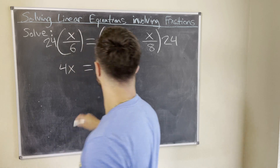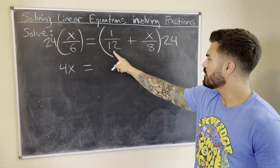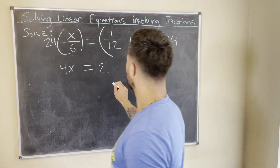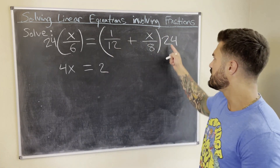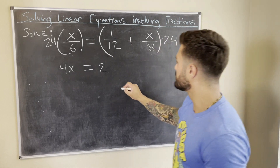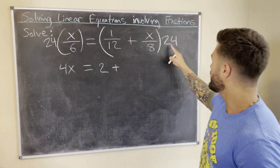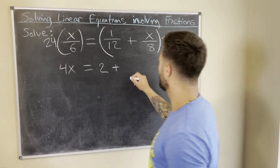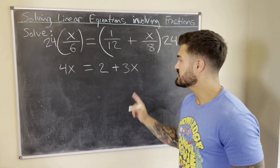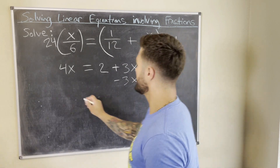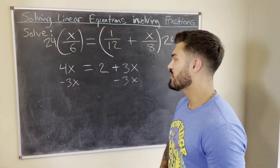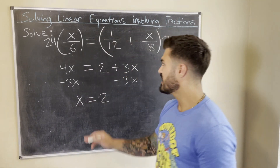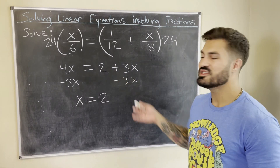24 times 1 over 12: 12 goes into 24 two times, so that simplifies to 2. Distributing the 24 to both terms on the left, we still have a plus, so plus 2. Then 24 divided by 8 is 3, since 8 goes into 24 three times, giving us 3x on the right. Now I subtract 3x from both sides: 4x minus 3x is just x.